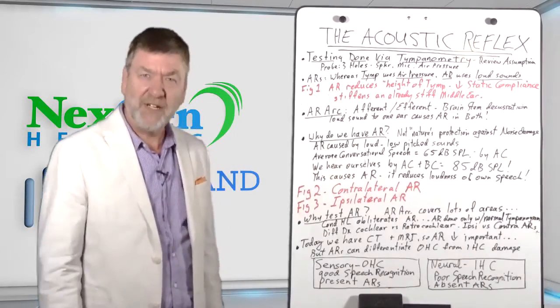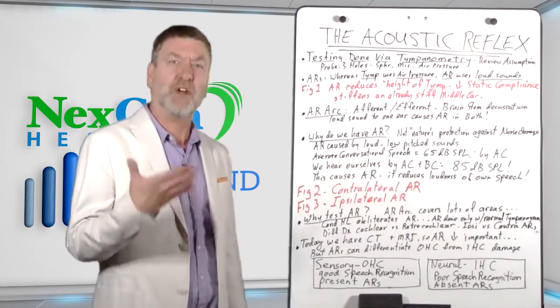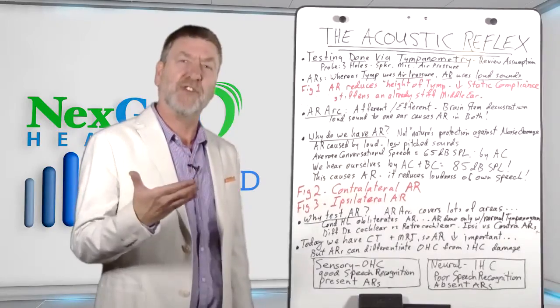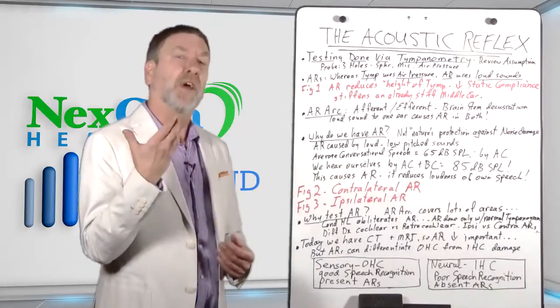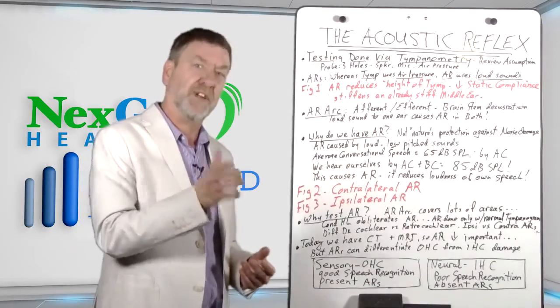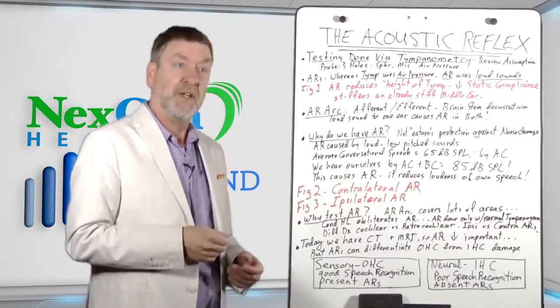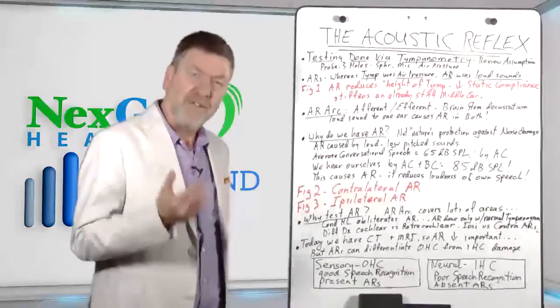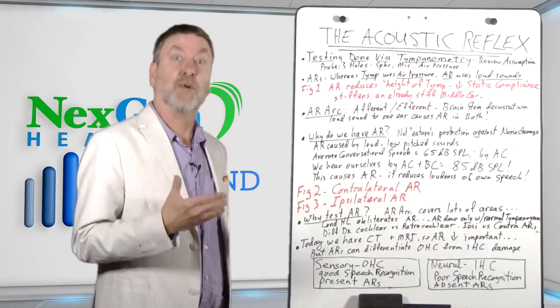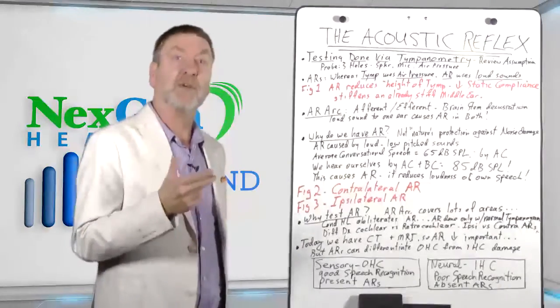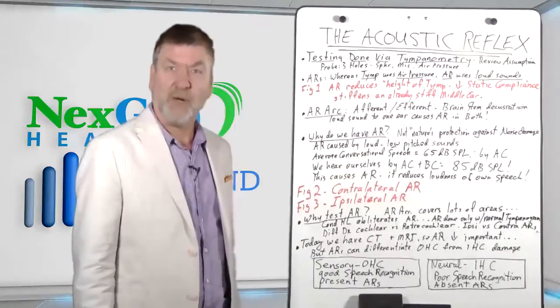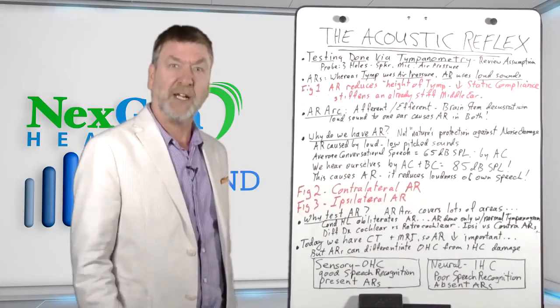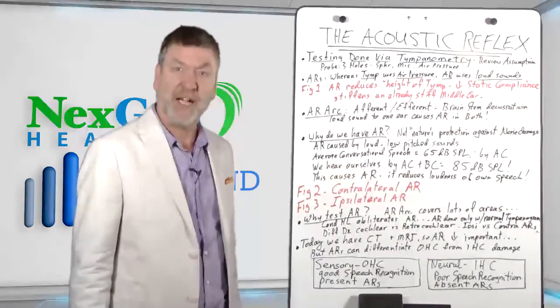You may recall from a previous whiteboard session on tympanometry that pediatricians often used it in order to differentially diagnose otitis media and other conductive middle ear problems. Tympanometry is a quick and fast non-behavioral method to assess middle ear function. It's used by audiologists who are quite well trained in it and also by an emerging number of hearing instrument practitioners.